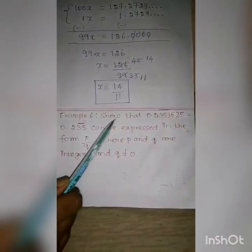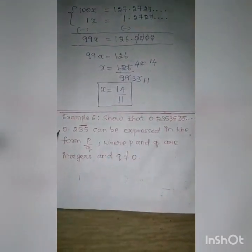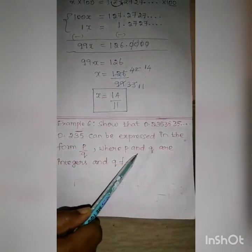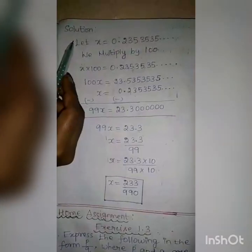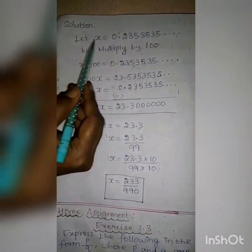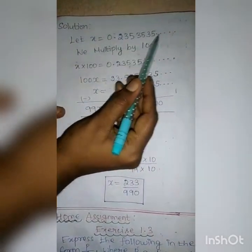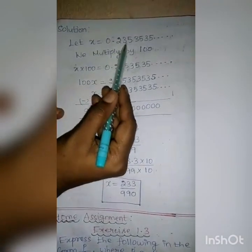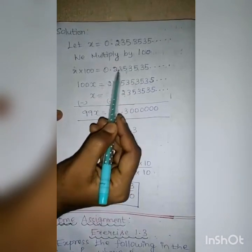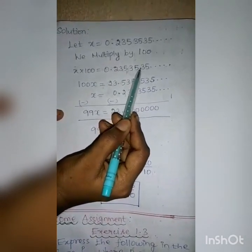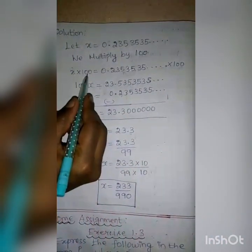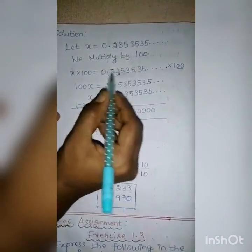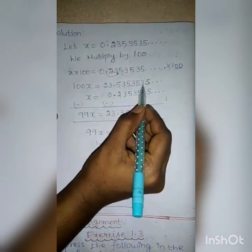Example 6. Show that 0.2353535 etc., 0.235 bar, can be expressed in the form P by Q, where P and Q are integers and Q not equal to 0. Solution. Let us take X equal to 0.2353535 etc. Here, how many numbers are repeated? 2 numbers are repeated — that is, 3 and 5 are repeated. So we multiply the LHS and RHS by 100. X into 100 equals 0.2353535 etc. into 100. Two zeros means the point moves from left to right by 2 places, so it becomes 23.5353535 etc.